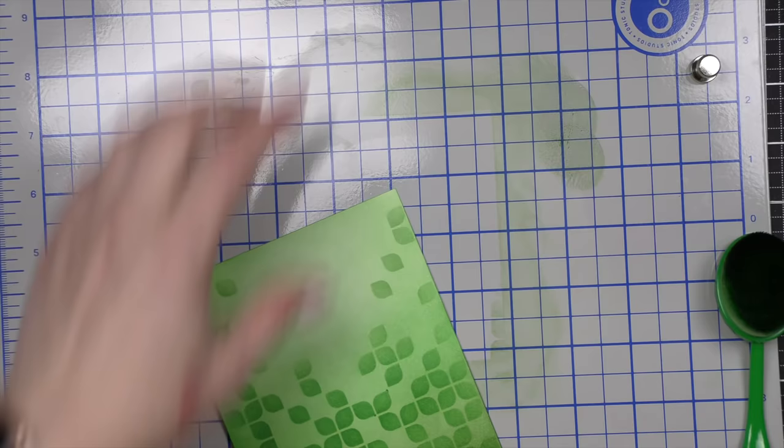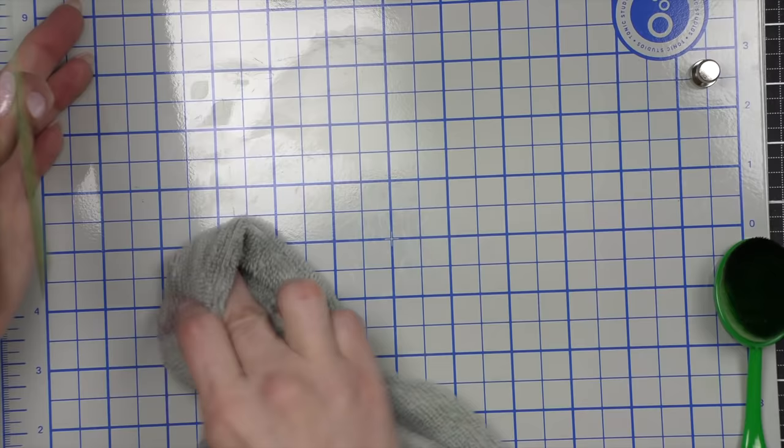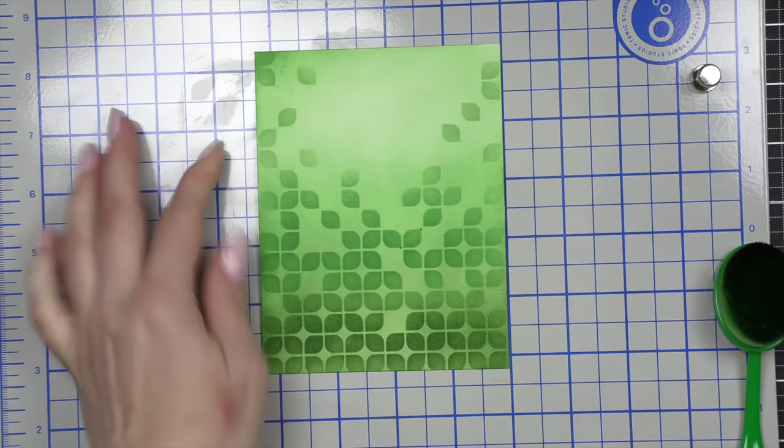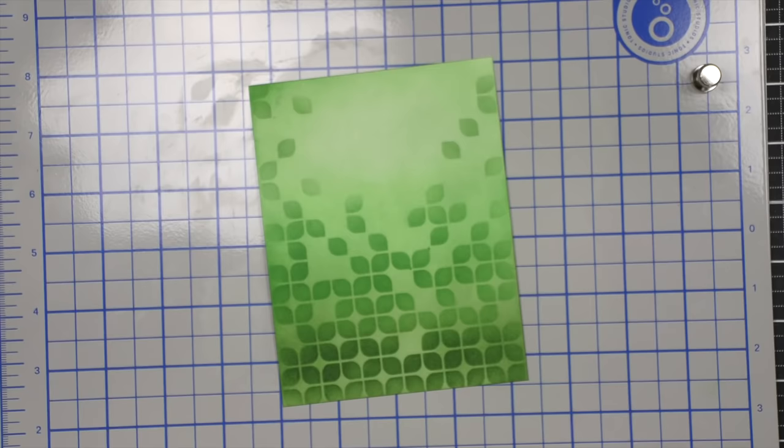When the inks are fresh and new, it's going to be a little bit more sharp I guess I want to say. As the ink dries and is absorbed into the cardstock, it's going to flatten out, smooth out, and be a little bit more subtle, which is what I'm going for in the finished card design.